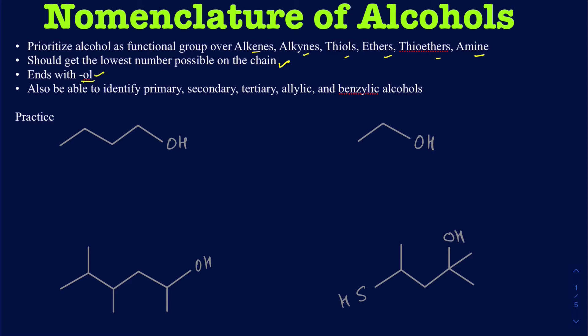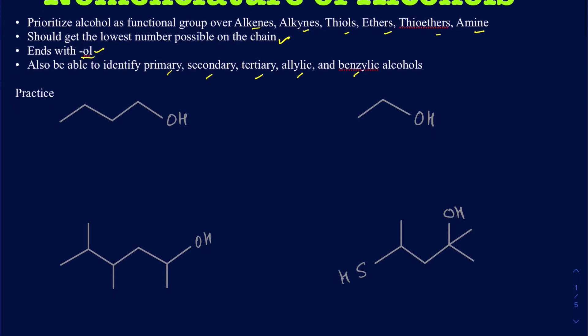In addition to that, you also want to be able to identify primary, secondary, tertiary, and allylic and benzylic alcohols, because it's important to identify those when you do the reaction mechanisms. It's better to do practice when you're trying to learn naming alcohols, or not just alcohols, but any other compound. I have a bunch of examples here and I'm going to go over those one by one. It's probably a good idea if you pause the video and try to solve those on your own and match with my answers.